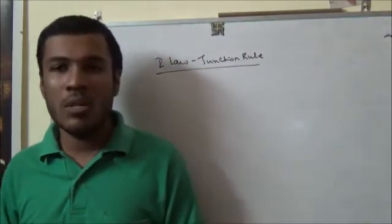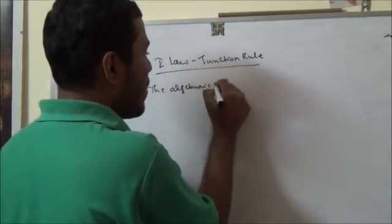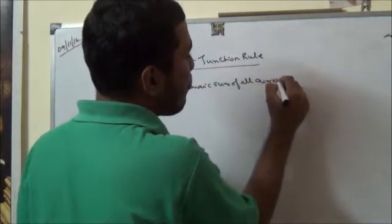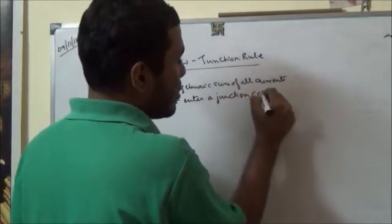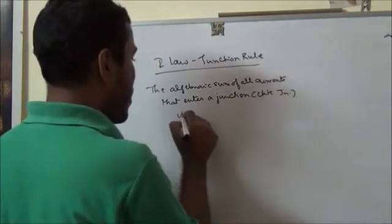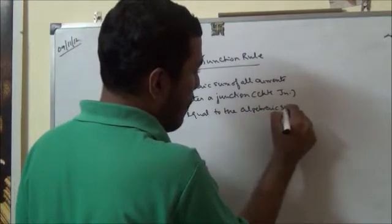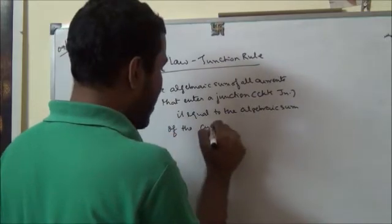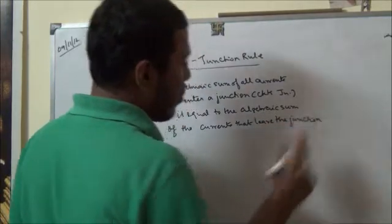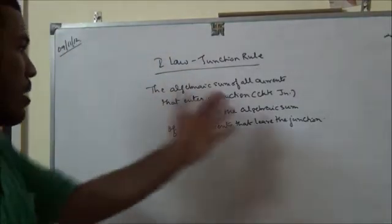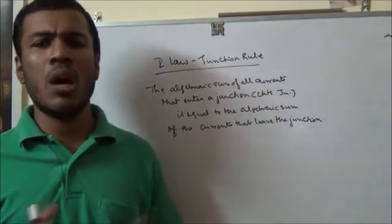Here also, the rule is very simple: the algebraic sum of all currents that enter a junction — here we mean a circuit junction — is equal to the algebraic sum of the currents that leave the junction. The algebraic sum of all currents that enter a circuit junction is equal to the algebraic sum of all the currents that leave the junction. This is the basic Junction Rule of Kirchhoff's.